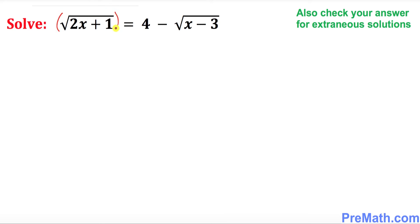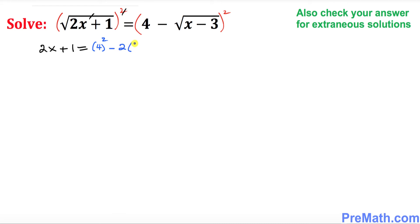We're going to square both sides because we are dealing with square roots. Once you square both sides, the square and square root undo each other. We get 2x plus 1 on the left. On the right side we use the fact that (a minus b) squared equals a² minus 2ab plus b², giving us 4² minus 2 times 4 times the square root of (x minus 3) plus the square root of (x minus 3) squared.